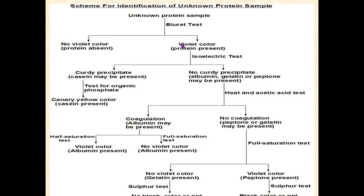When you do the biuret test, you will get two options: either there will be formation of violet color, or there will be no violet color. If there is no violet color, then your sample is not a protein — protein is absent and confirmed. If your sample is showing no violet color in the biuret test, only that one test is needed, and your sample is confirmed not a protein.